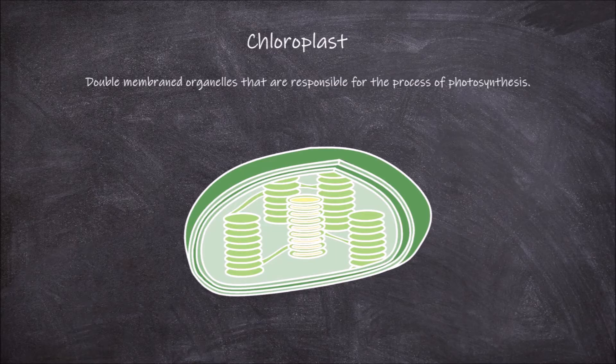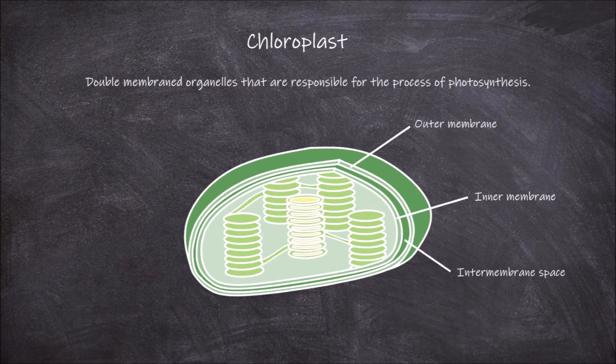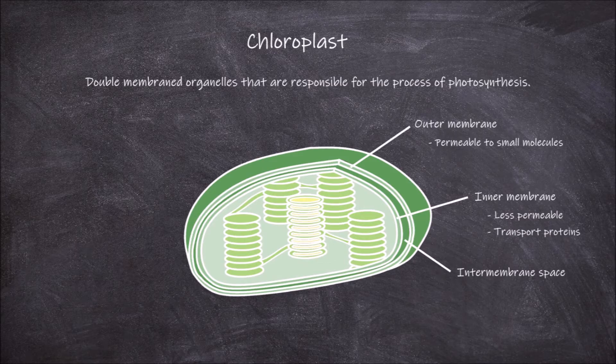The chloroplast is double-membraned. It has both an outer and inner membrane, and an intermembrane space between them. The outer membrane is semi-permeable to small molecules. The inner membrane is less permeable, and most molecules require embedded transport proteins to move across it.